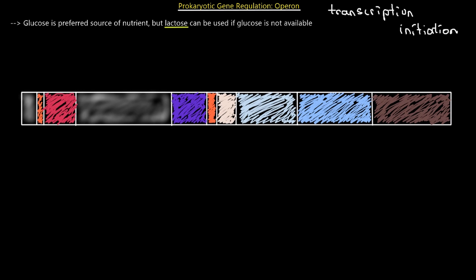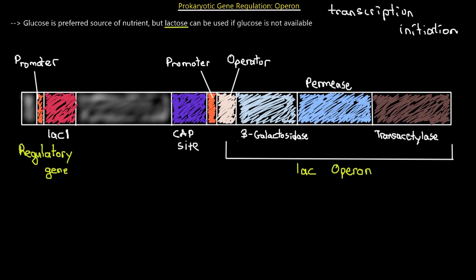If we take a look at the lac operon — this is just part of a prokaryotic chromosome that is coding for it. The lac operon contains three different genes: permease, beta-galactosidase, which are very important for the breakdown of lactose, and transacetylase. These three genes are controlled by a single promoter, a single operator, and a single cap site.